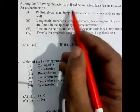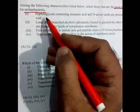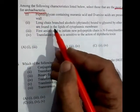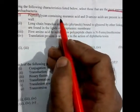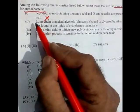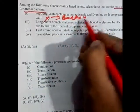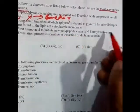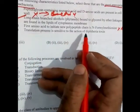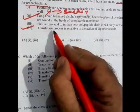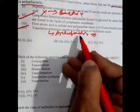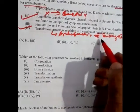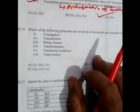Question 15: Which characteristics are most appropriate for archaebacteria? Archaebacteria have a unique cell wall with long-chain branched fatty acids linked to glycerol by ether bonds — this is true for archaebacteria. Peptidoglycan containing muramic acid is for bacteria, not archaea. Also, archaebacteria behave like eukaryotic systems in translation, so they are sensitive to diphtheria toxin. The second and fourth options are correct; the answer is C.